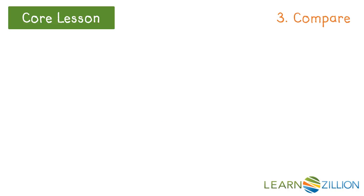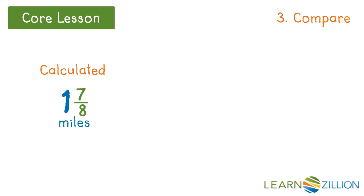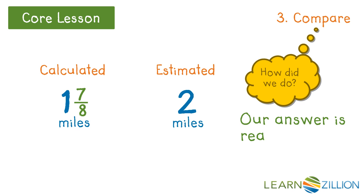Last, we need to compare our answer to our estimate to make sure our answer is reasonable. Otherwise, we will need to rethink the way we solved the problem. We calculated one and seven-eighths miles, and we estimated two miles. Although we arrived at two different answers, they are similar enough, which tells us our answer is reasonable.